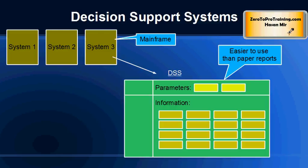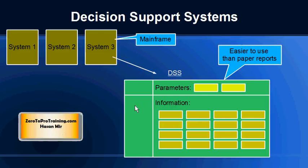Before we talk about Decision Support Systems, imagine the different departments of a company — for example, a receivables department responsible for managing customers, a payables department responsible for managing suppliers, and so on. Each department would run its own system, mainly on mainframes, with its own database and applications, disconnected from each other. There was a need to extract useful information from the raw data sitting in each of these systems.